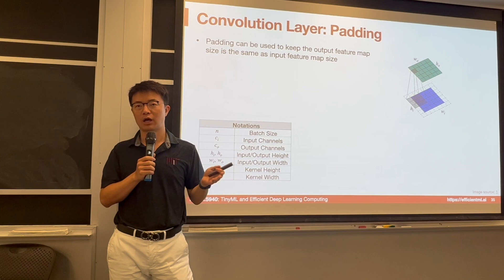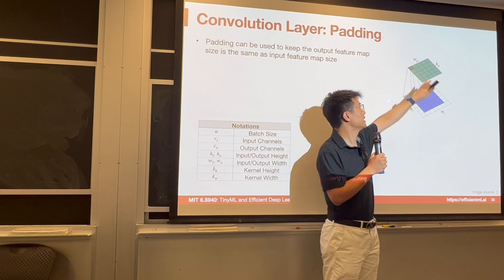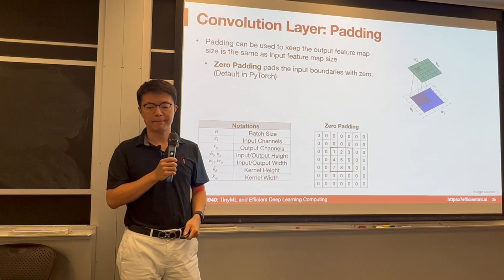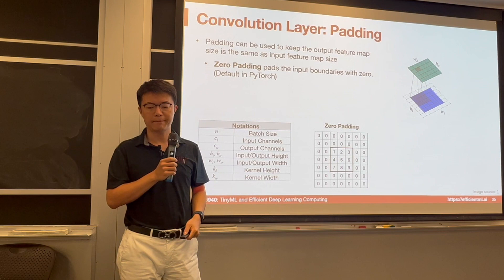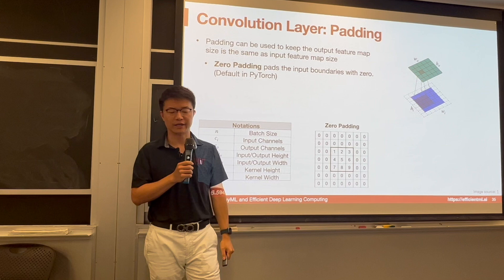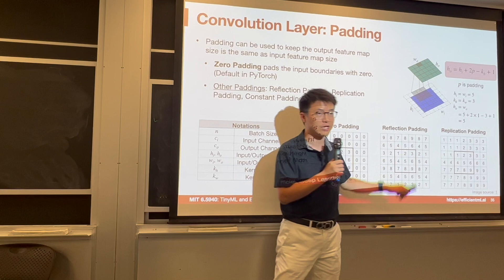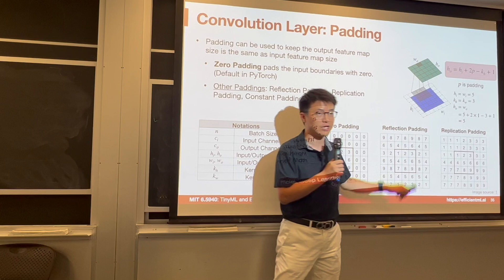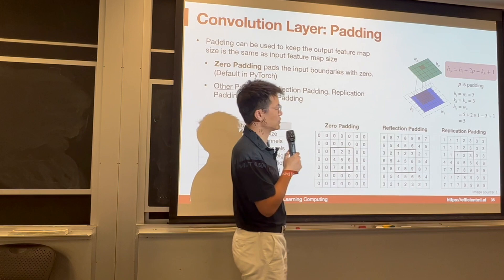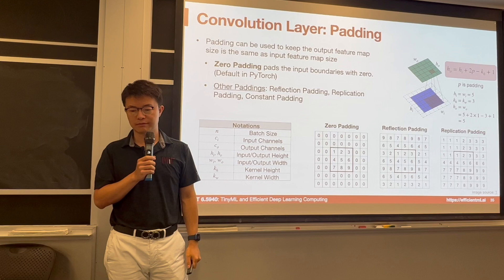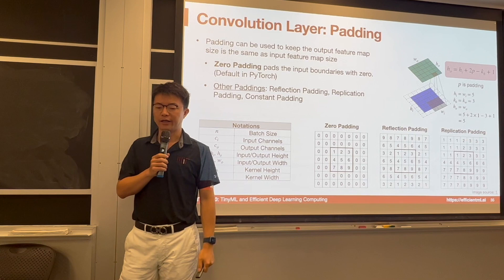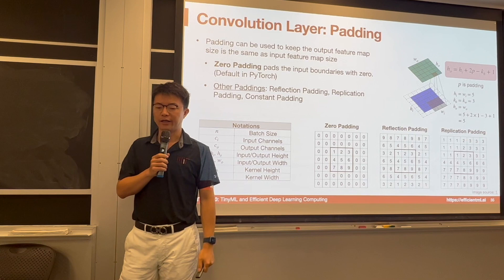To maintain the feature map size, we introduce padding. Rather than the output becoming smaller than the input, we pad the input so output and input sizes match. One common technique is zero padding — padding the input boundaries with zeros, which is the default in PyTorch. We can also do reflection padding, where border values are mirrored, or replication padding, where the closest valid value is replicated. Zero padding is very widely used in practice.